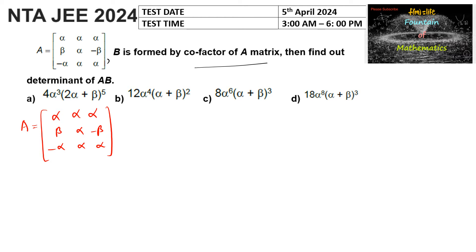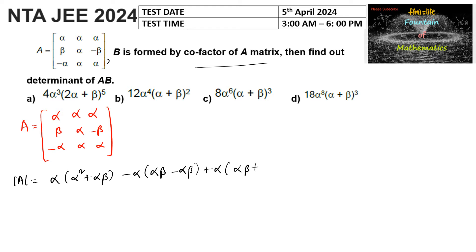Let us find the determinant of matrix A. We get alpha times of (alpha squared plus alpha·beta) minus alpha times of (alpha·beta minus alpha·beta), plus alpha times of (alpha·beta plus alpha squared). So we can write: alpha cubed plus alpha²·beta minus alpha²·beta plus alpha²·beta, and again plus alpha²·beta plus alpha cubed.